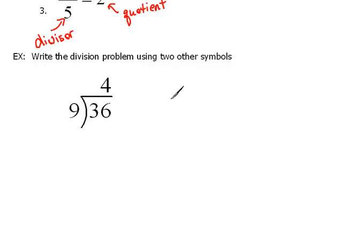Well, if we were to write that out the very first way we ever saw division problems, we would write it out as 36 divided by 9 equals 4.